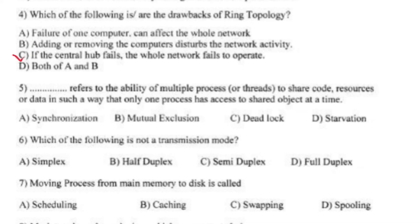Dash refers to the ability of multiple processes to share code, resources, or data in such a way that only one process has access to the shared object at a time. Write optional B — mutual exclusion.